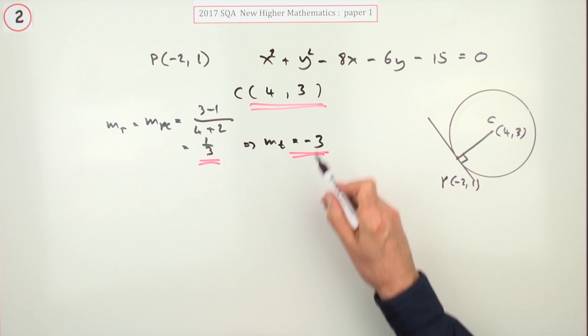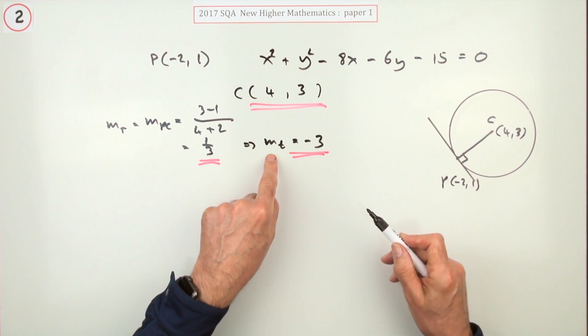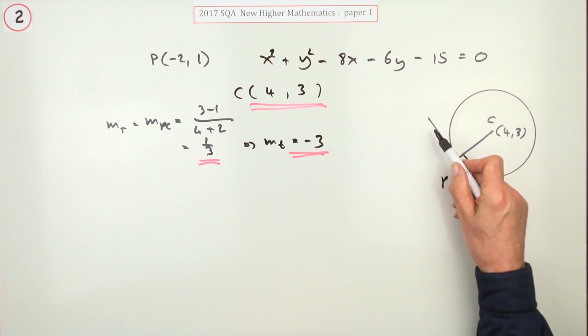So I reckon those would be the first three marks. One for the center, one for the gradient of the radius, and one for the perpendicular to it, the gradient of the tangent.